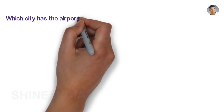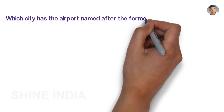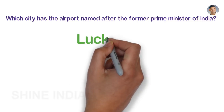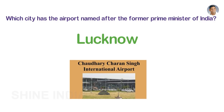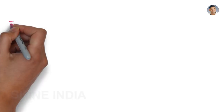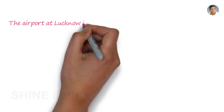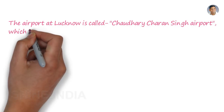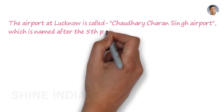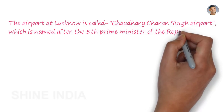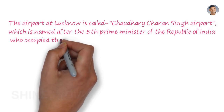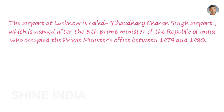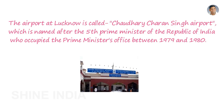Which city has the airport named after a former Prime Minister of India? Lucknow. The airport at Lucknow is called Chaudhary Charan Singh Airport, which is named after the 5th Prime Minister of the Republic of India, who occupied the Prime Minister's office between 1979 and 1980.